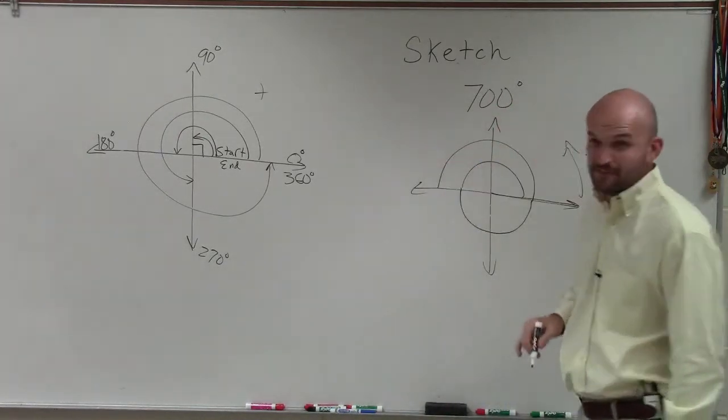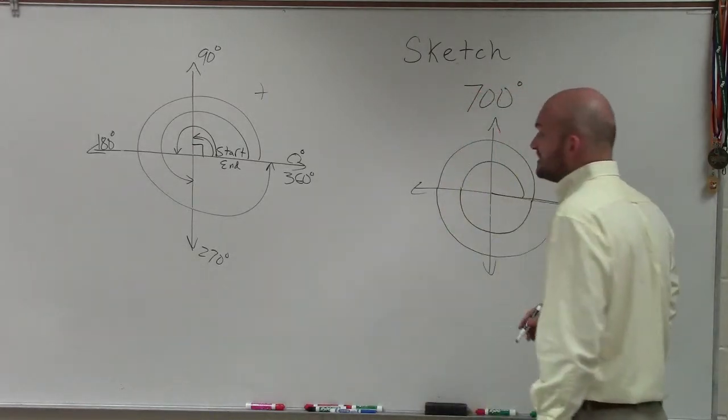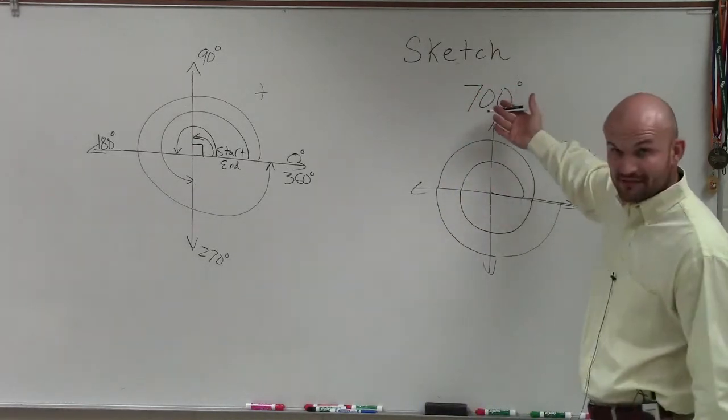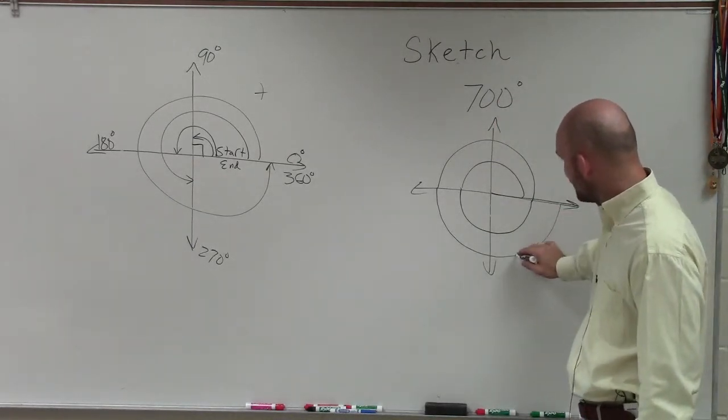Add another 180. That's going to be 540. And if I added another 180, that would be 720. But my answer is only 700 degrees. So that means I need to cut out 60 degrees from there.